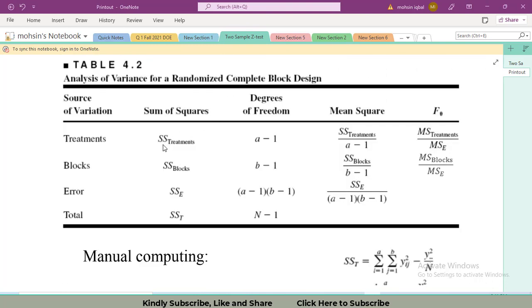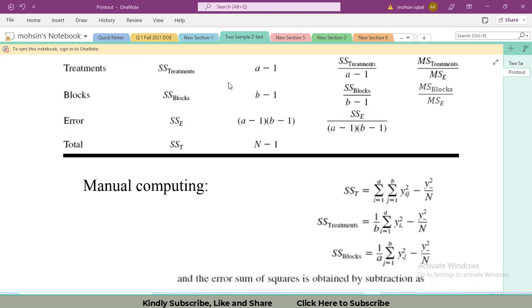We will have to find sum of squares treatments, sum of squares blocks, and sum of squares total. By having these three values, the fourth value, sum of squares error, can easily be found. These are the three formulas that will be used in this example. yij means the individual value, each individual value.